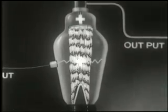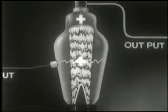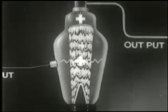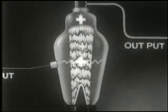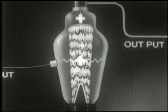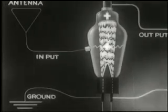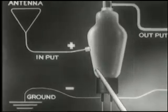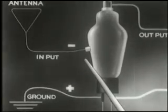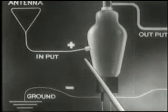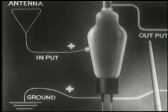Conversely, when the grid is positive, an equally large effect is exerted in increasing the flow of electrons from cathode to anode. The important thing to note here is this: a small amount of power applied at the grid is amplified into a large amount of power in the anode, or work circuit.